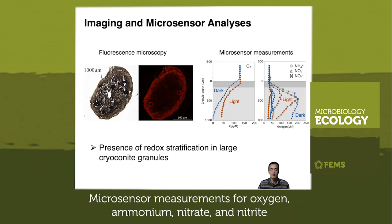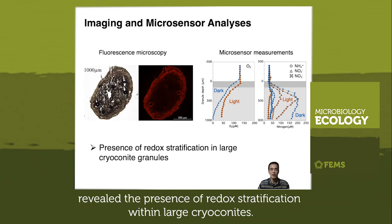Microsensor measurements for oxygen, ammonium, nitrate, and nitrite reveal the presence of redox stratification within large cryoconites.